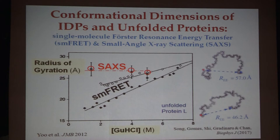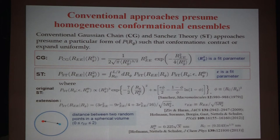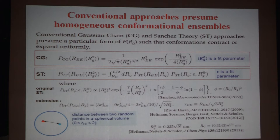So how do people infer a radius of gyration from end-to-end distance in a conventional way? There are two main methods. The more popular one is to use the Gaussian chain model. The Gaussian chain model gives you a Gaussian distribution as a function of R_ee, and then you just plug in the radius of gyration because, according to the Gaussian model, the mean square radius of gyration is just one-third of the mean square end-to-end distance. So the R_G becomes a fit parameter — you have a measurement of the end-to-end distance from FRET, and then you fit into this formula and get your R_G.